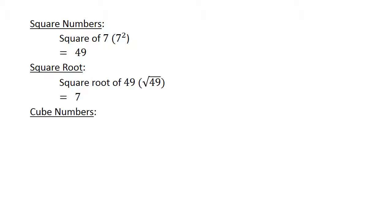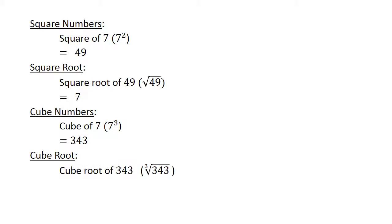Cube numbers: the cube of 7 equals 343. And the cube root of 343 equals 7. Decimal addition.